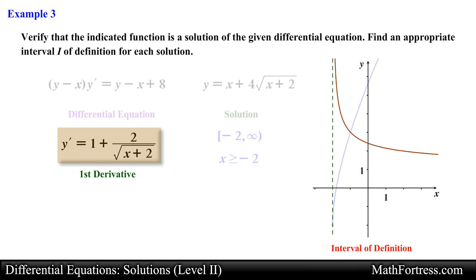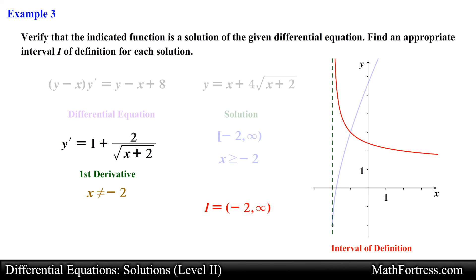Let's look at the graph of the first derivative. Notice that the function is not defined at x = -2 since at this value we would be forced to divide by 0. Since the first derivative is not defined at x = -2, it is also not differentiable at this value. So an appropriate interval of definition would be from -2 exclusive to positive infinity, making sure we exclude -2. We need to ensure that the function and its derivatives are differentiable on the given interval of definition — keep this detail in mind.